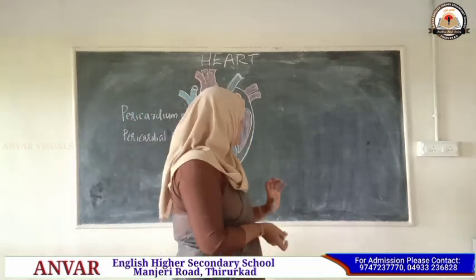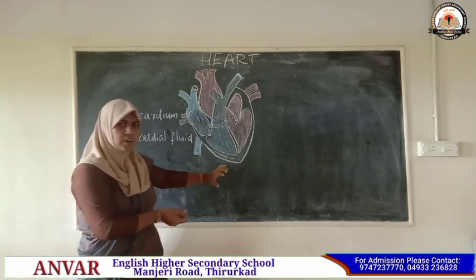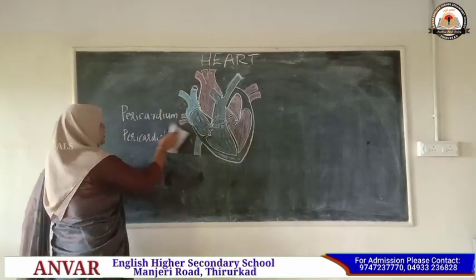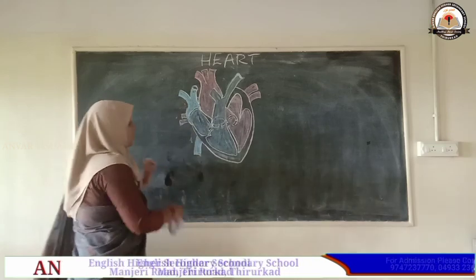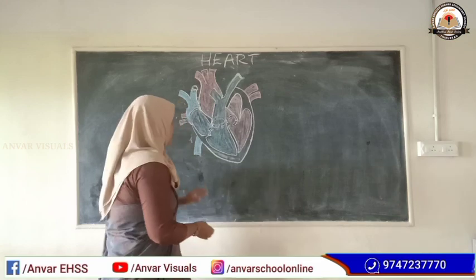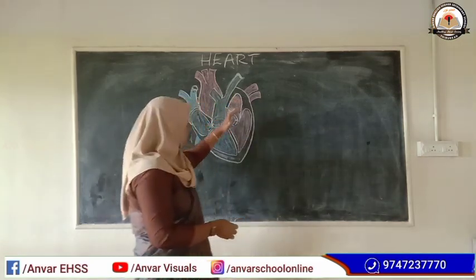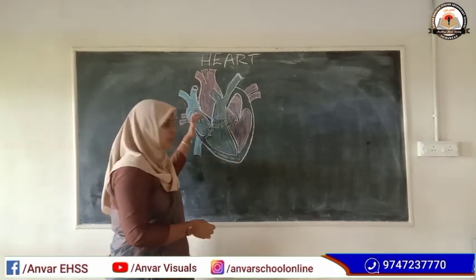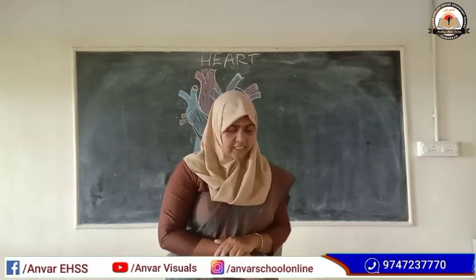This is the longitudinal section of the heart. Can we move to the structure of the heart? The heart contains four chambers. The upper chambers are the atria and the lower chambers are the ventricles. The heart contains two atria and two ventricles.